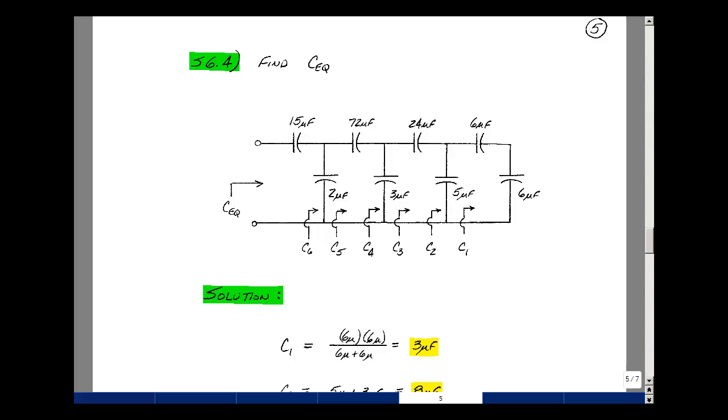If you recall from the Chapter 6 notes, having capacitors in series is like having resistors in parallel. So if you have two capacitors in series, their equivalent capacitance is the product over the sum. Because they're equal, you'll get half the value.